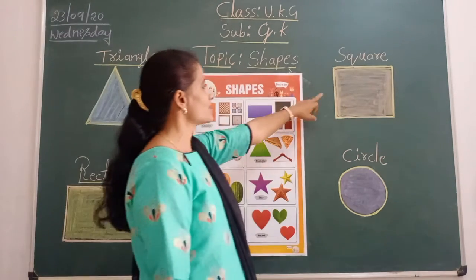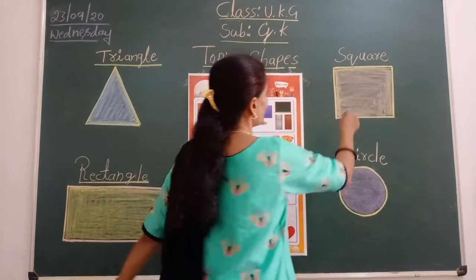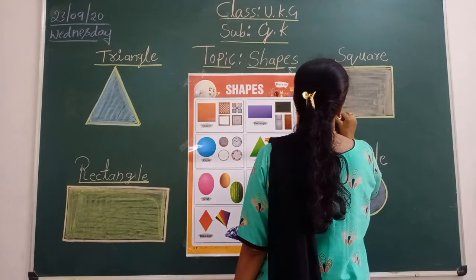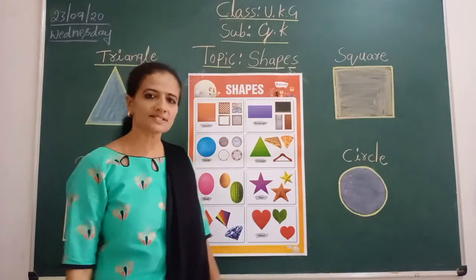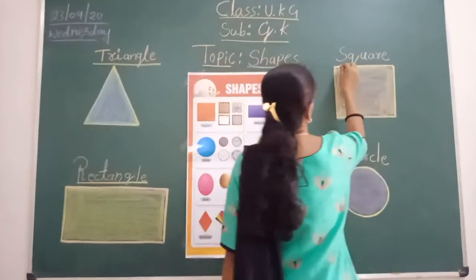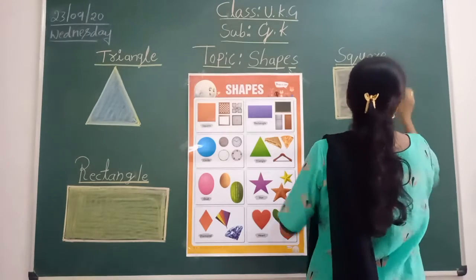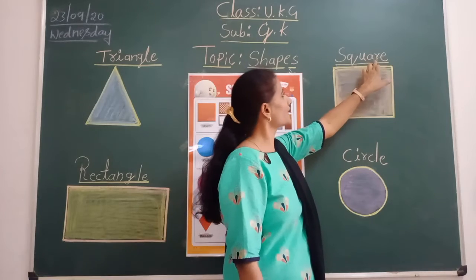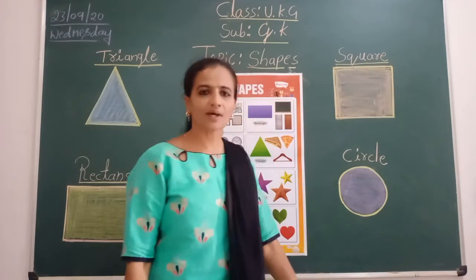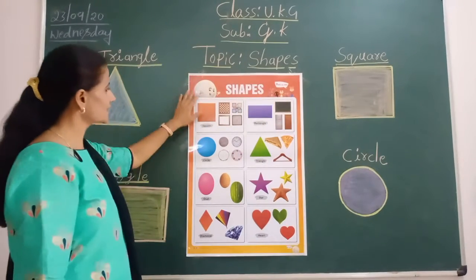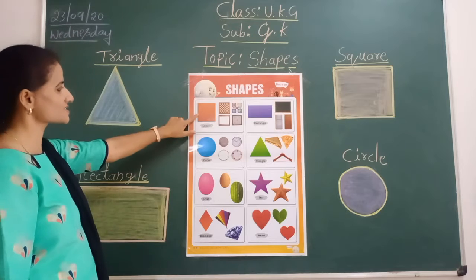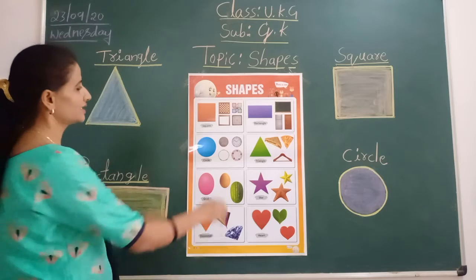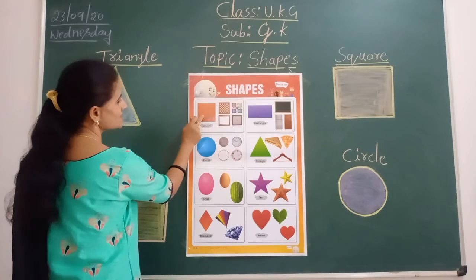Next, we will go to square. How many sides? 1, 2, 3, 4. How many sides? Four. What is the spelling of square? S-Q-U-A-R-E. We will see in the chart — see the first one. What is this shape? Square. Which color in the chart? Orange color.